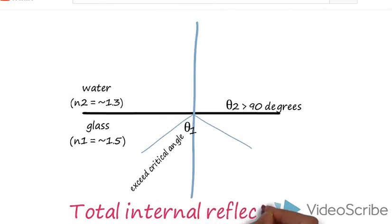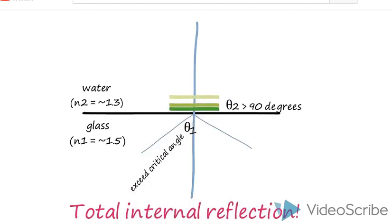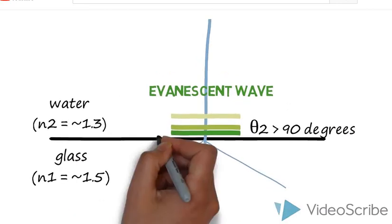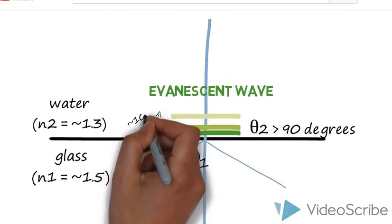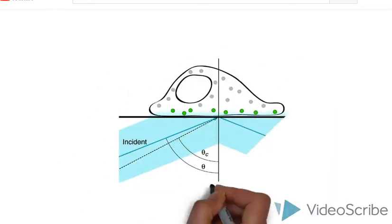If the light is totally reflected, then how do the fluorophores near the interface get excited on the other side? Well, it turns out that an evanescent wave is generated at the point of total internal reflection. This energy source decays exponentially from the interface and travels about 100 nm up into the second medium, which contains your sample.